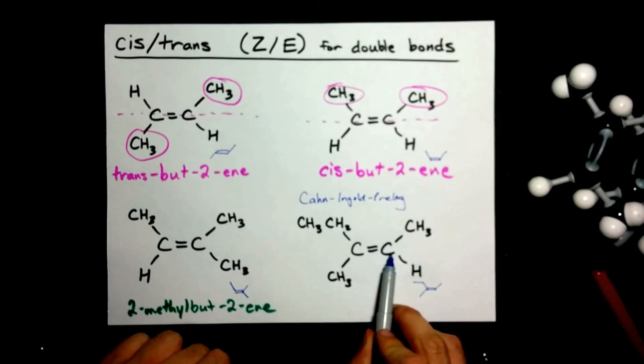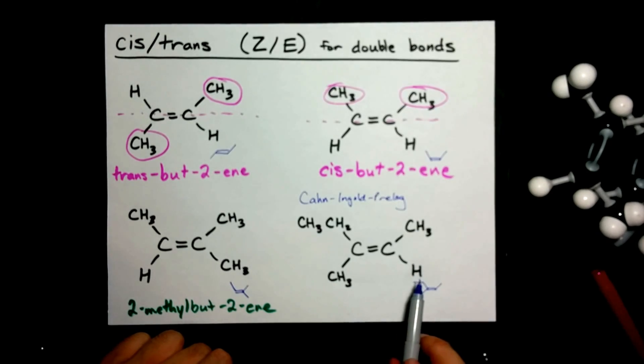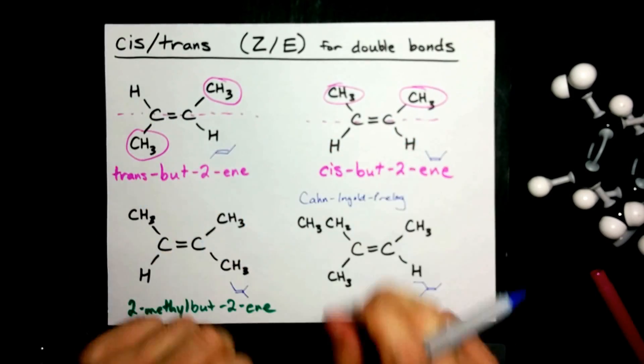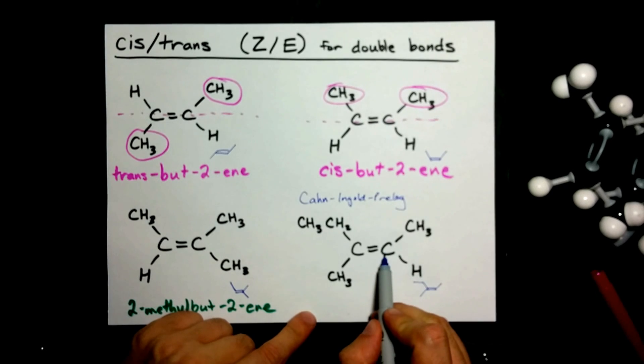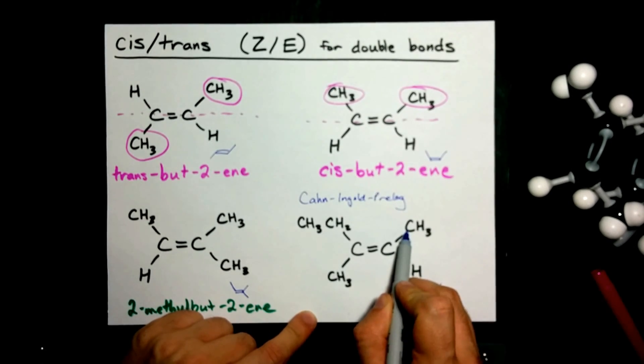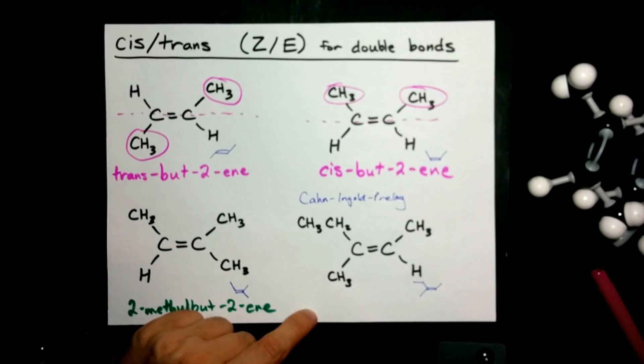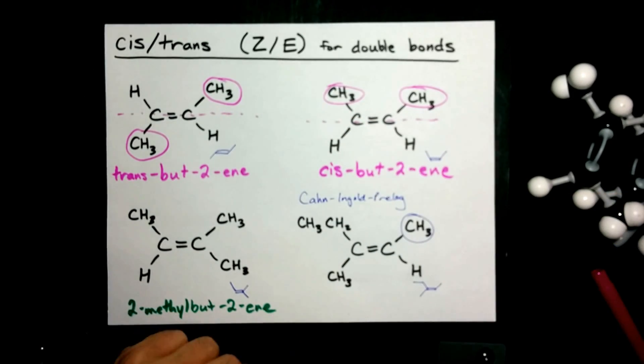This carbon atom, which has a methyl group and an H attached to it, well, you have two choices for which one gets precedence. It's attached to an H and a C, and carbon has a higher atomic mass than hydrogen does, so the methyl group wins out.